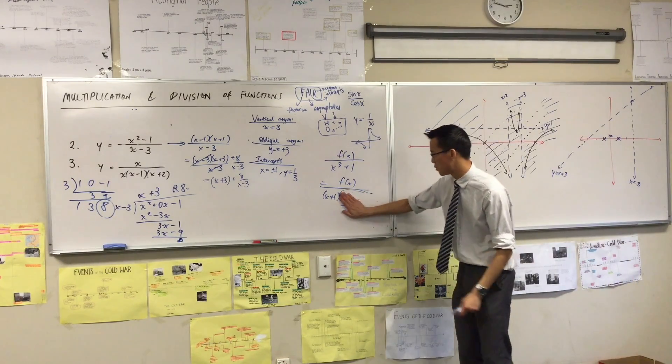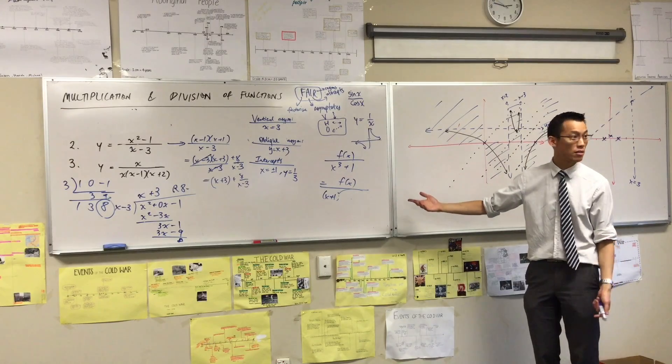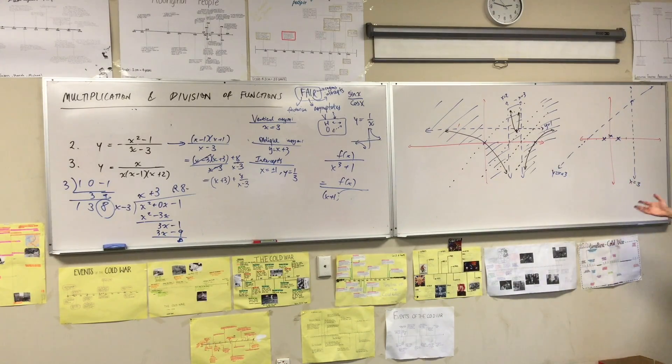So what does it contribute to the sign of the whole thing? Answer: it doesn't contribute to anything because it's always a positive number. So in this case you should be able to factorize down, but if you can't, you can still work out what to do with that.